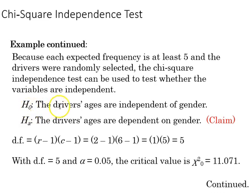So the H0 is that the driver's ages are independent, and the HA is that the driver's ages depend on gender. So that's the claim, and we've got our degrees of freedom here equal to 5, and with 5 degrees of freedom at the 0.05 level, our cutoff for chi-square is 11.071, which we obtained from our chi-square table.